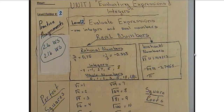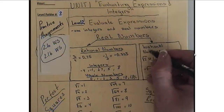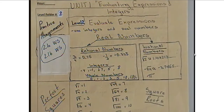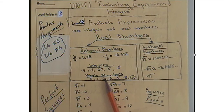First thing, write down 'real numbers' and separate into two boxes, because each one of these boxes will represent two different things. One is called rational numbers and the other one is called irrational numbers. Real numbers are divided into those two categories. Rational numbers are also known as fractions or ratios — they could be whole numbers or integers. Let's be more specific and describe what each one of those means.